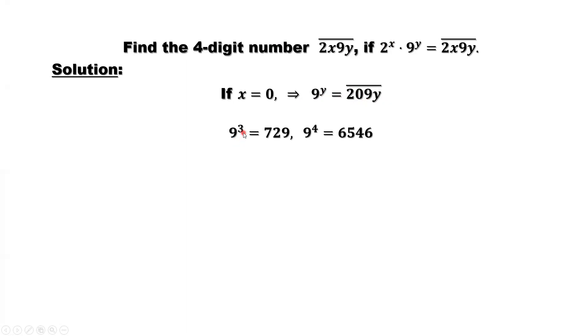9 to the power 3 equals 729. 9 to the power 4 equals 6561, which is bigger than this number. 729 is less than this number. There is no such y that satisfies this condition.